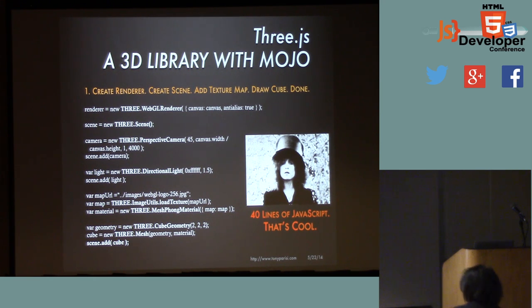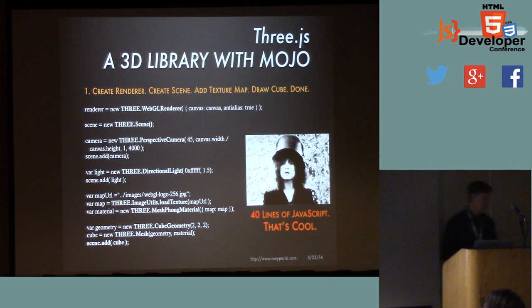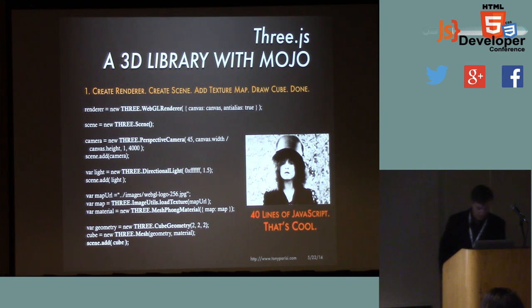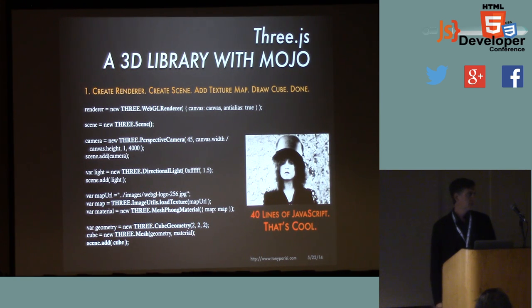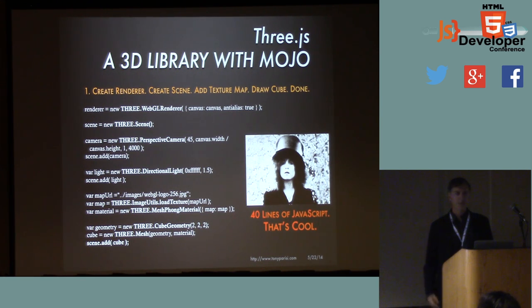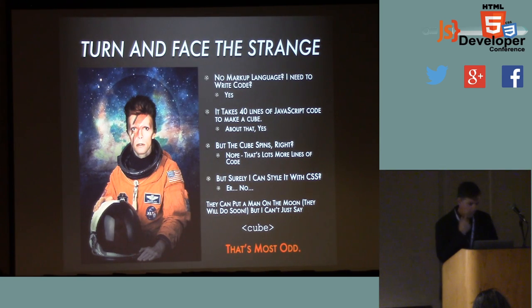What most of us do, especially as mere mortals who don't like to mess about in low-level rendering APIs all day long, is we find an open source library. The most popular one is called Three.js. With Three.js, instead of 300 lines of code, you've got about 20 lines of JavaScript plus surrounding markup — another 40 to get things on the page with the canvas element. You create a renderer object, a scene, a camera, a light, get a texture map via URL, and create a cube geometry added to the scene. But that thing doesn't spin — it's not animated. If you drag the mouse and want to do anything with it — click on it — 40, 50, 100 more lines of code before you're done.